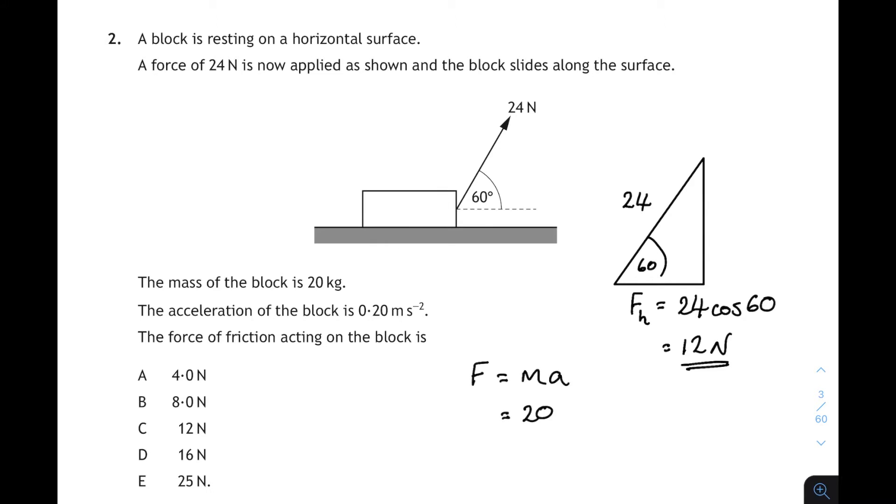Now, the acceleration of the 20 kilogram block is 0.2 meters per second squared. So the unbalanced force is 4 newtons. So if we've got a 12 newton horizontal pulling force and an unbalanced force of 4 newtons, then the friction must be 8 newtons to give us that unbalanced force of 4 newtons. So the friction that we're looking for is 8 newtons. That corresponds to answer B. Okay, moving on again.